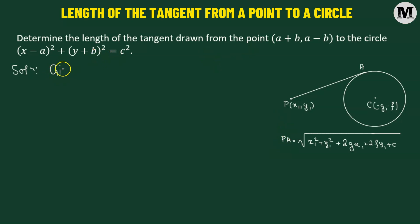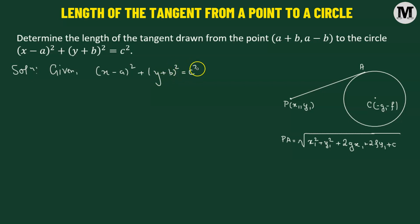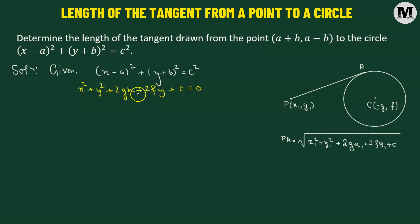In our case, the circle's equation is given in its standard form, so we'll convert it to general form. General form means writing it as x squared plus y squared plus 2gx plus 2fy plus c equals zero, because we need the values of g, f, and c in order to find the length of the tangent.